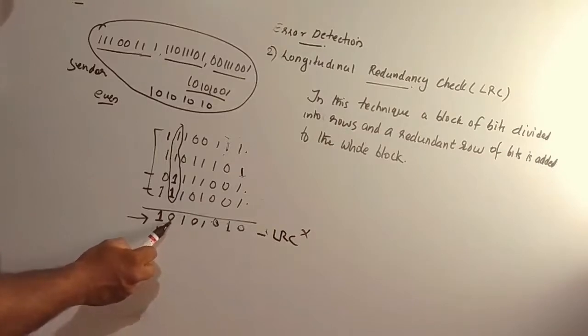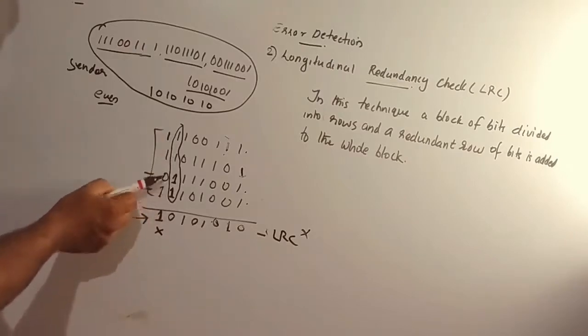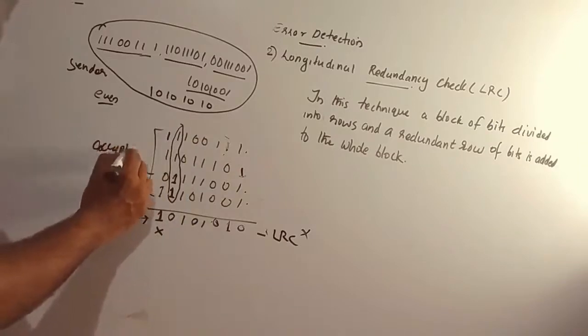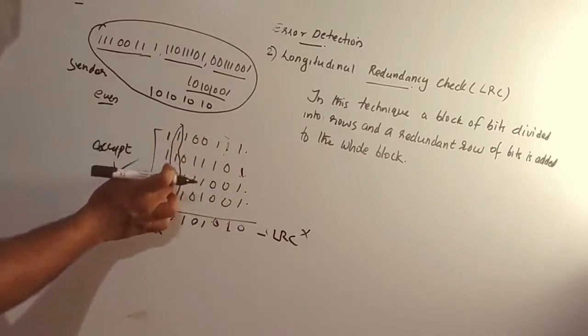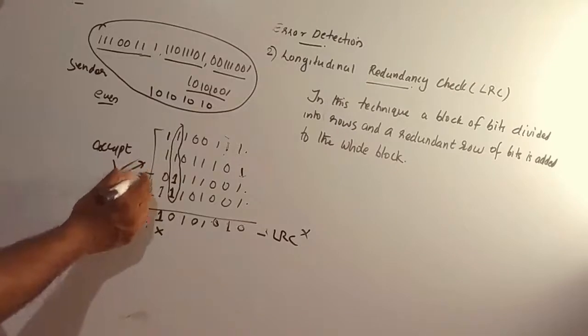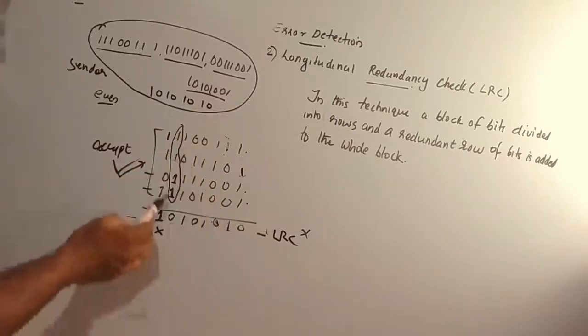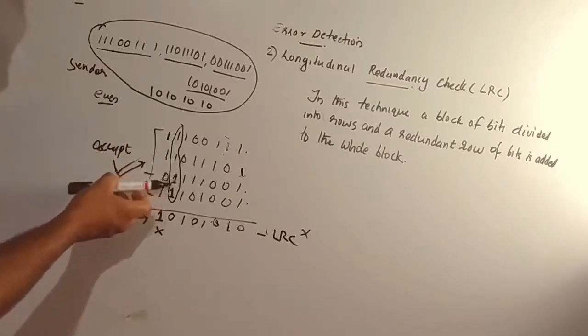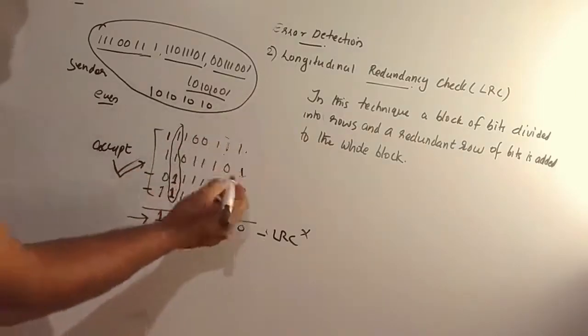The receiver will calculate parity and it will still come out correct, even though errors occurred. The algorithm will accept the corrupted message. LRC has failed because when bits in different data units change in the same column position, the parity remains unchanged and LRC fails to detect the error.